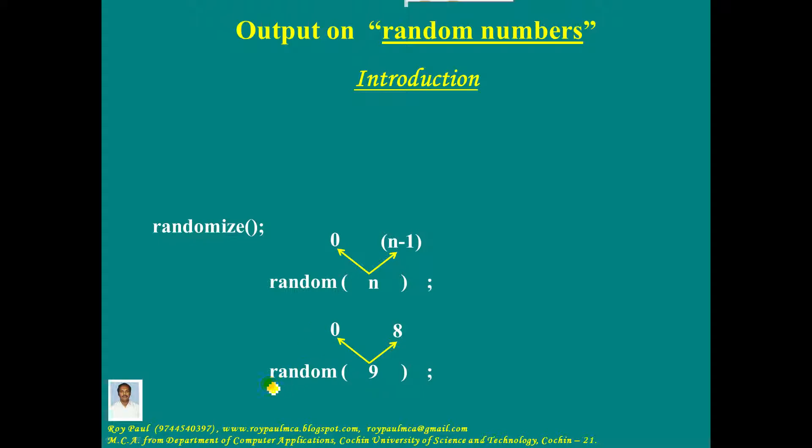So, for the proper working of random function, in a program, first you need to call the randomize function, and after that you should call the random function. The last point: the header file corresponding to randomize and random is stdlib.h.